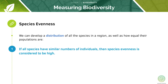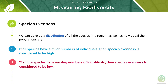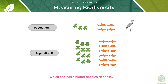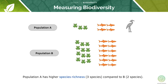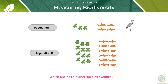If all species have a fairly comparable number of individuals then the species evenness is considered to be high. If all species have incomparable numbers of individuals then the species evenness is considered to be low. Population A has a higher species richness compared to population B, while population B has more species evenness compared to population A.